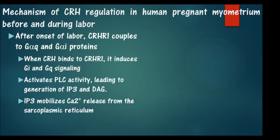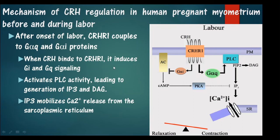During labor, CRHR1 couples to G-alpha Q and G-alpha I proteins. Because these are inhibitory G proteins, adenylyl cyclase becomes inhibited and protein kinase A activation also becomes inhibited, whereas phospholipase C activation occurs and inositol triphosphate is produced in higher concentrations. The inositol triphosphate increases the release of calcium from the sarcoplasmic reticulum, raising intracellular calcium, and the myometrial cells go into the contraction state rather than the relaxation state.